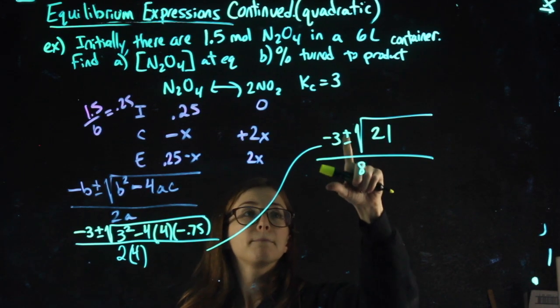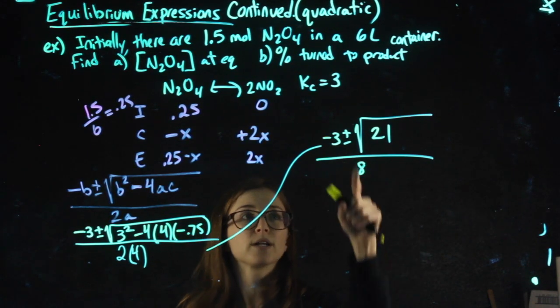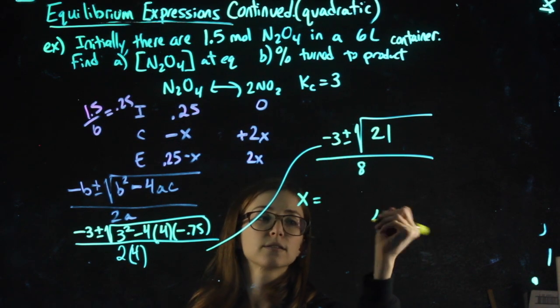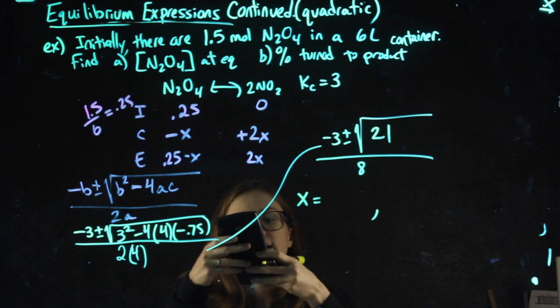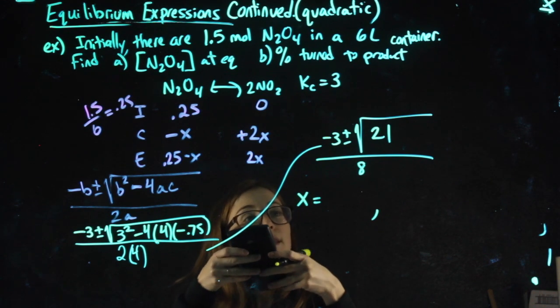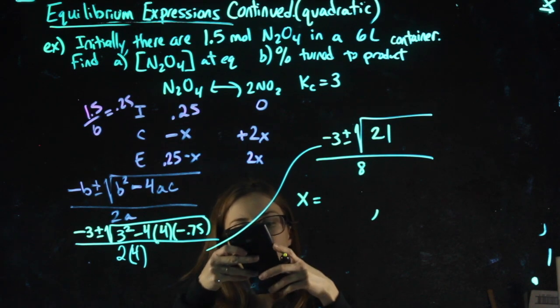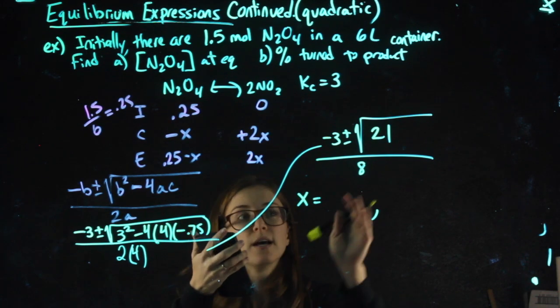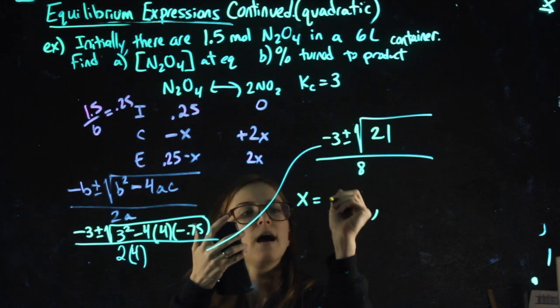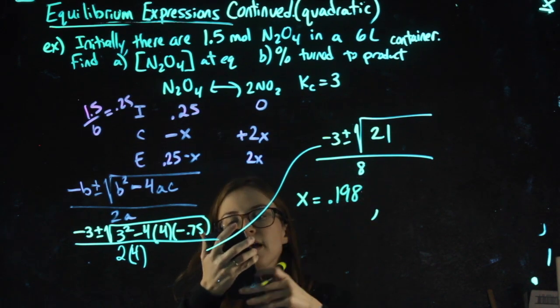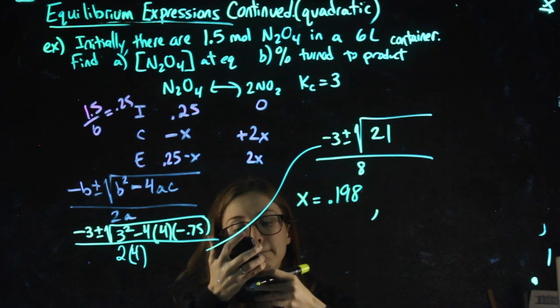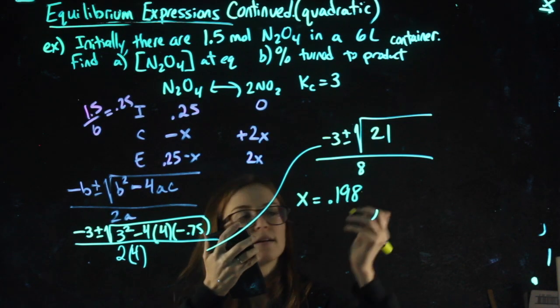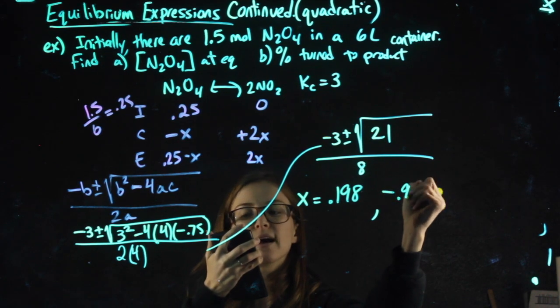So from here, plus or minus means I'm going to have to do this twice, once with the plus sign, once with a minus sign, and I'm going to get two answers for x. So the first one: negative 3 plus the square root of 21, I like to press equals at this point, then divide by 8, and I get 0.198. And negative 3 minus the square root of 21, press equals, then divide by 8: negative 0.948.